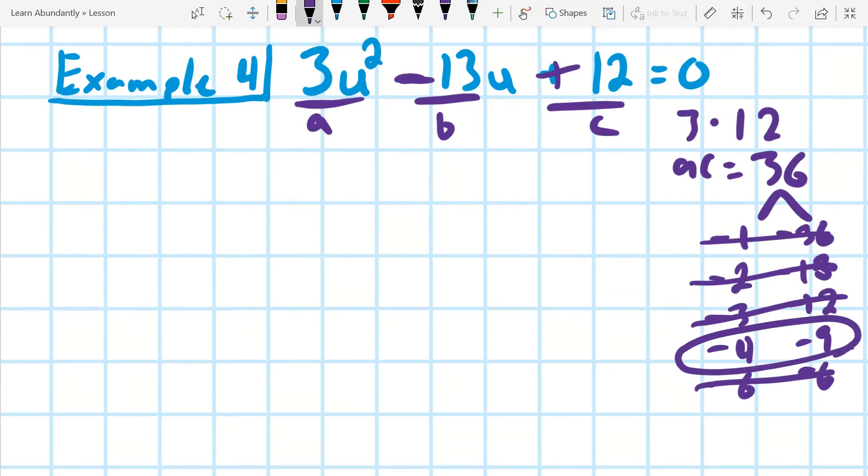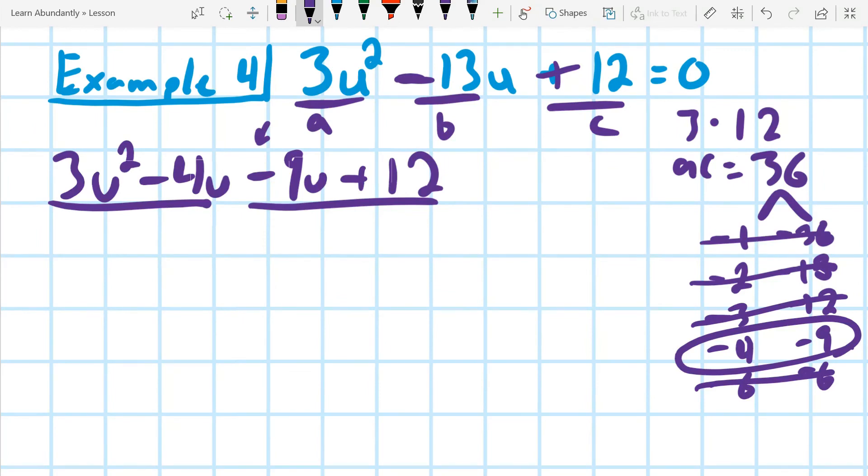So I'm going to go ahead and split that up as 3u squared minus 4u minus 9u plus 12. I'm going to go ahead and factor by grouping. I'm going to remember to take out this negative here on the 9, by the way. So when I do that, I end up with just taking out a u, and that leaves me with 3u minus 4. I'm going to take out a negative 3, and that leaves me with positive 3u minus 4.